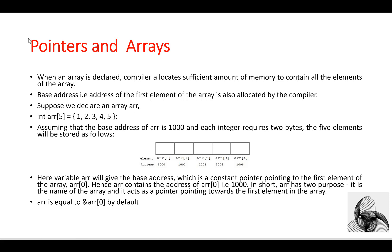When an array is declared, the compiler allocates sufficient memory to contain all its elements. For example, we have an array ARRR of type int and size 5, with elements 1, 2, 3, 4, 5. Assuming the base address of ARRR is 1000 and each integer requires 2 bytes, the 5 elements will be stored sequentially.